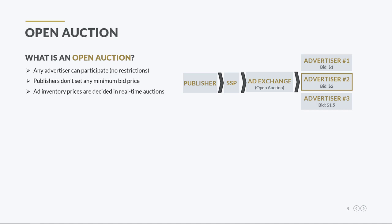Now let's see how ad inventory can be traded in an open auction. For this example, let's assume that a publisher offers an ad space for sale in an ad exchange through his supply side platform. Many advertisers can bid through their demand side platforms for that ad space. The first advertiser places a bid of $1, the second advertiser places a bid of $2, and the third of $1.50. In this case, the auction winner will be the second advertiser, who placed a bid of $2. So, the actual price of that ad space was determined in the open auction.